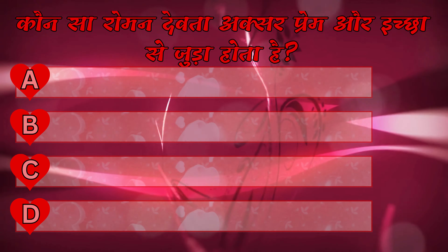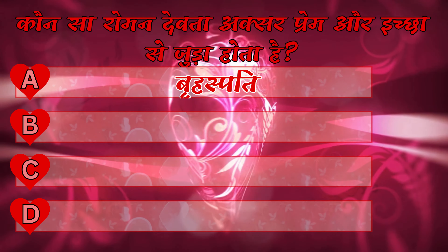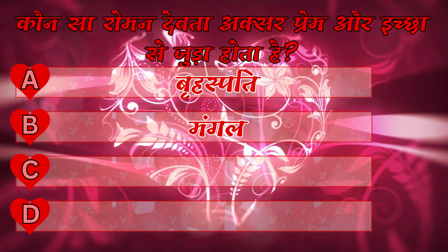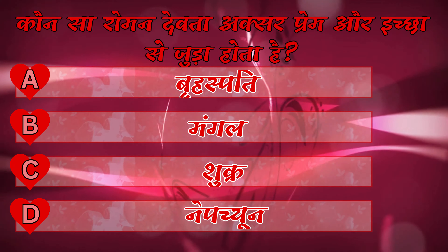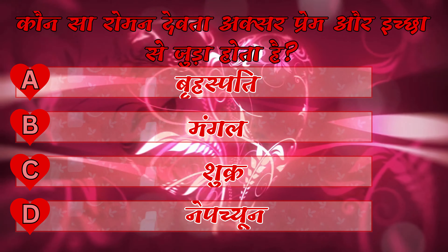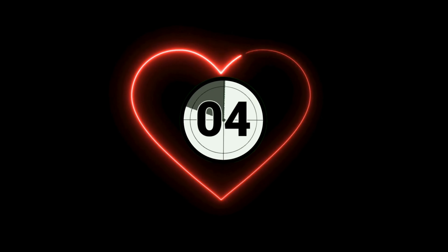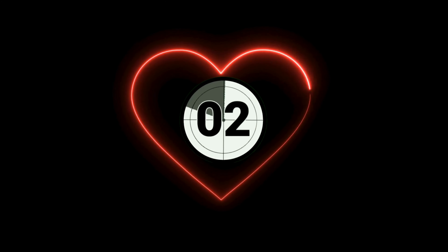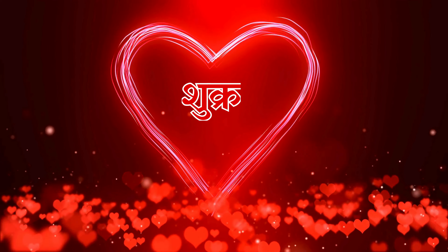कौन सा रोमन देव अक्सर प्रेम और इच्छा से जुड़ा होता है? A. बृहस्पति, B. मंगल, C. शुक्र, D. नेपच्यून. आपका जवाब होगा उत्तर C. शुक्र.